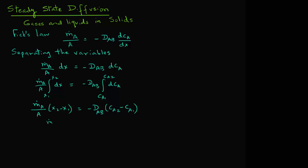So we can write our integrated expression as m_A divided by A equals D_AB times (C_A1 minus C_A2) divided by (x2 minus x1). This gives us an expression to determine the mass flux due to molecular diffusion when there is a concentration gradient.